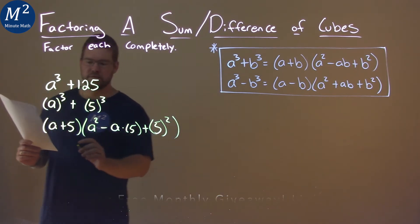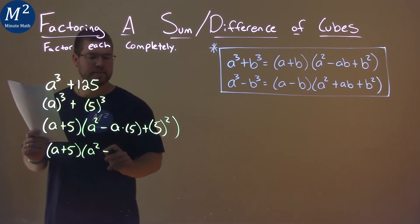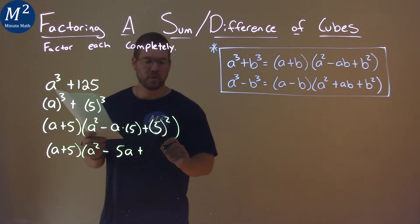So now let's simplify. a plus 5 is here and we have a squared minus a times 5 is 5a and 5 squared is 25.